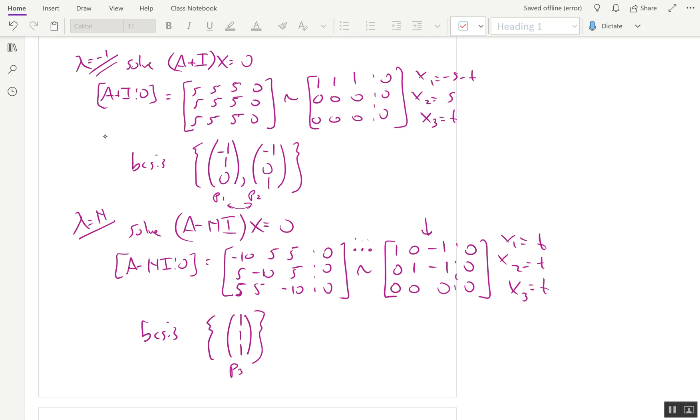Then for our D, since there are two eigenvectors corresponding to lambda equals negative 1, I'm going to have to put negative 1 on the diagonal twice. And then there's one eigenvector for lambda equals 14, so I'll put that in last. And there's my diagonal matrix.